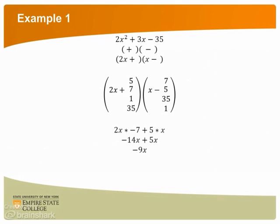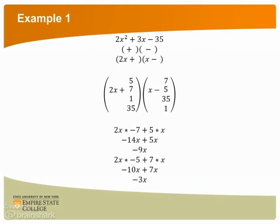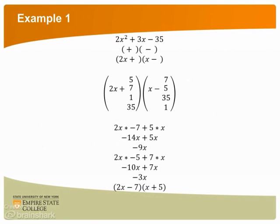We cross off this option and try the next pair. Now we have 2x times negative 5 plus x times 7. This is negative 10x plus 7x, which gives us negative 3x. We wanted positive 3x — we have the correct number but the wrong sign, which is an easy fix. We will switch the plus and the minus inside the parentheses. So when we factor 2x squared plus 3x minus 35, we have 2x minus 7 times x plus 5.